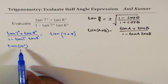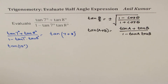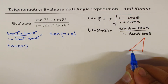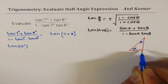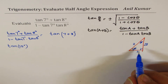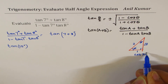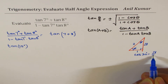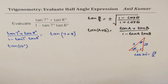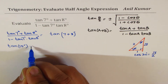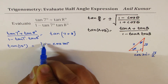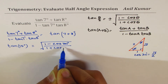We don't know what tan(15°) is directly, but if we sketch the special 30-60-90 triangle with sides 1, 2, and √3, we can find cos(30°), which equals √3/2. Since 2 times 15° is 30°, we can use the half-angle formula and write tan(15°) as the square root of (1 minus cos 30°) over (1 plus cos 30°). Since we are in the first quadrant, we take the positive value.